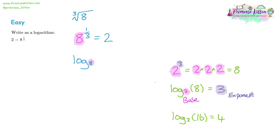So we're saying how many eights need to be multiplied together to get the number two? The answer is going to be less than one, because eight times one is eight — that's too big. The exponent is a third, and so the exponent goes after the equal sign: one third. So to write eight to the power of a third equals two as a logarithm, you write: one third equals log₈(2). The key thing is to memorize which numbers go where — the base, the exponent, and the answer in both versions.